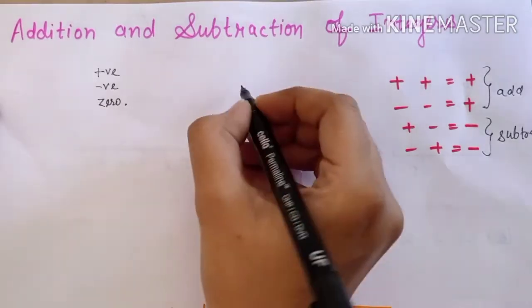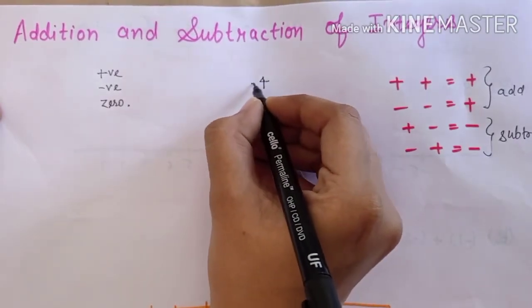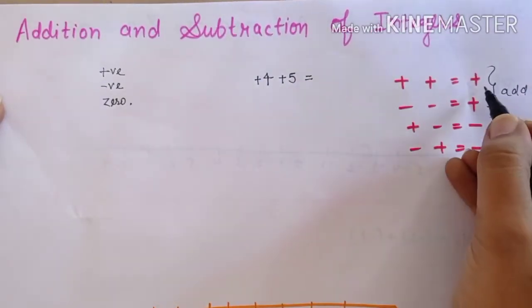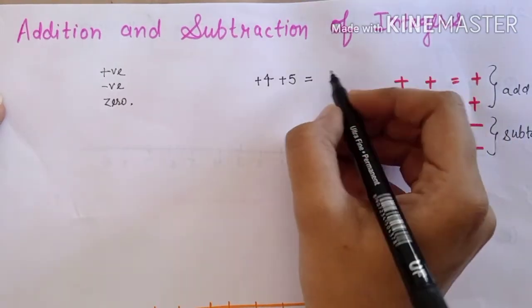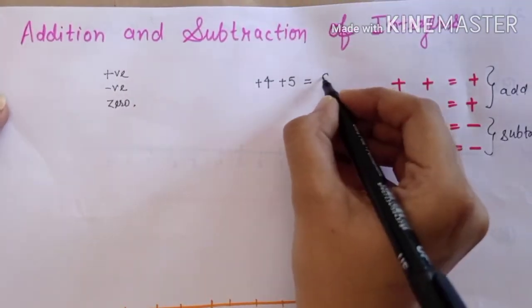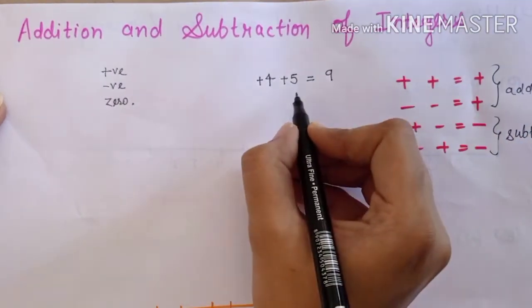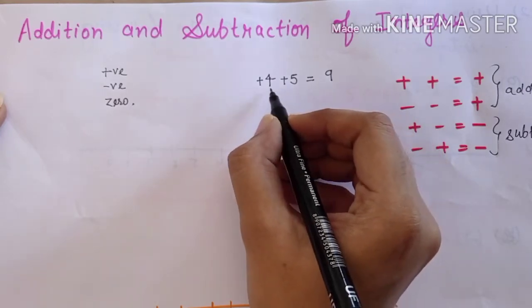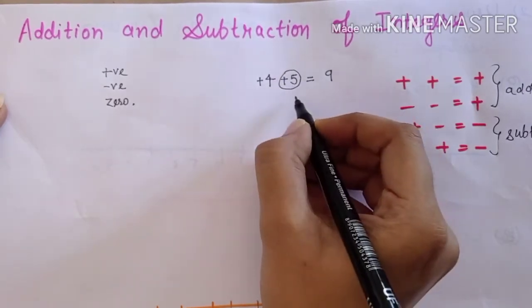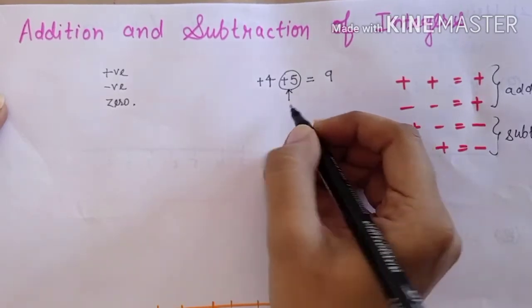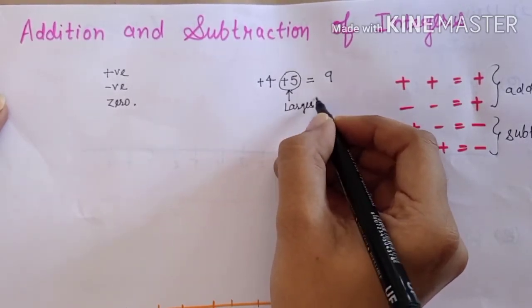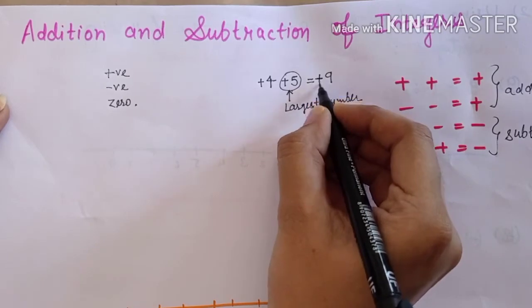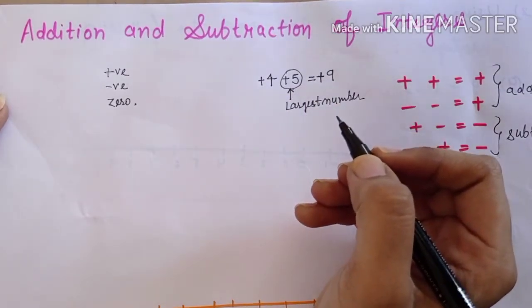Example consider करते हैं। हमारे पास number है plus 4 plus 5। Same sign है, तो हम add करेंगे: 4 और 5 को add करेंगे तो 9। Answer का sign वो होगा जो largest number का sign है। Largest number 5 है, उसका sign plus है, तो answer होगा plus 9।